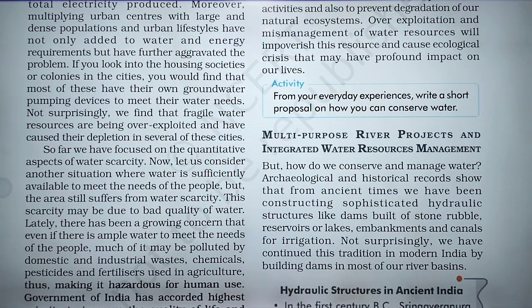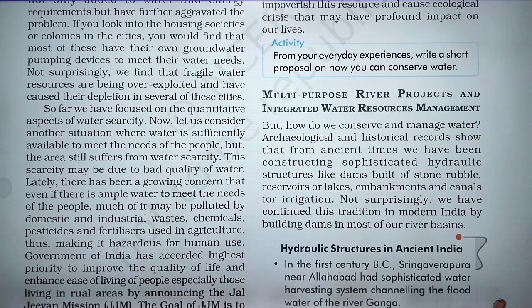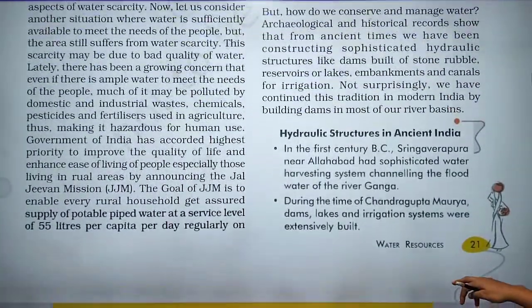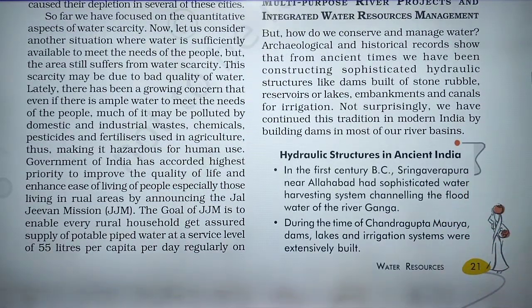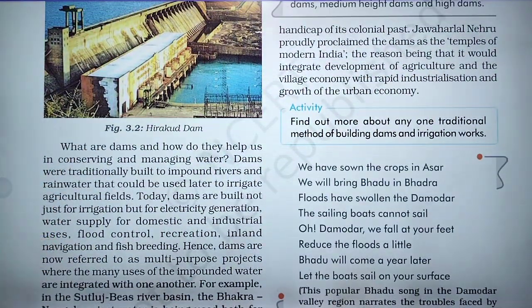The topic is multi-purpose river projects and integrated water resource management. How do we conserve and manage water? Archaeological and historical records show that from ancient times we have been constructing sophisticated hydraulic structures like dams built of stone and rubble, embankments, and canals for irrigation. We have continued this tradition in modern India by building dams in most of our river basins.